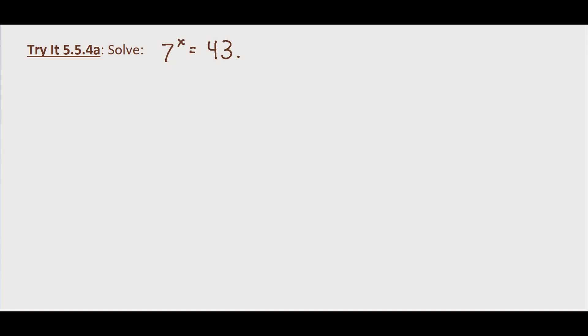So this one we're asked to solve 7 to the x equals 43. How do we go about that? We isolate the exponential, in this case it's already isolated, and then we just take the log of both sides.